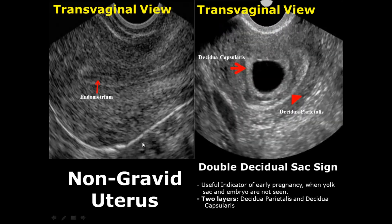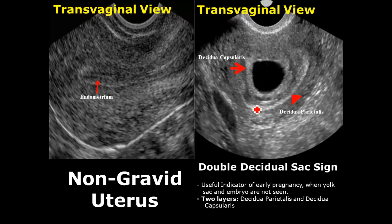The double decidual sac sign is a useful indicator of early pregnancy when the embryo and yolk sac are not seen. It consists of two layers: the outer layer is the decidua parietalis, which lines the uterine cavity, and the inner layer lining the gestational sac is the decidua capsularis.